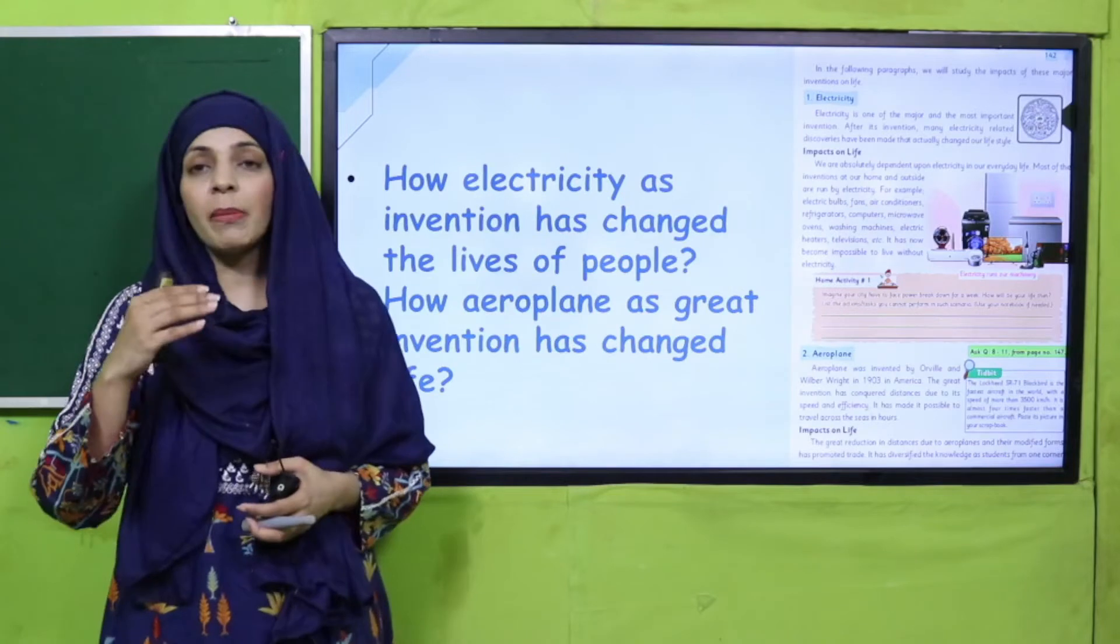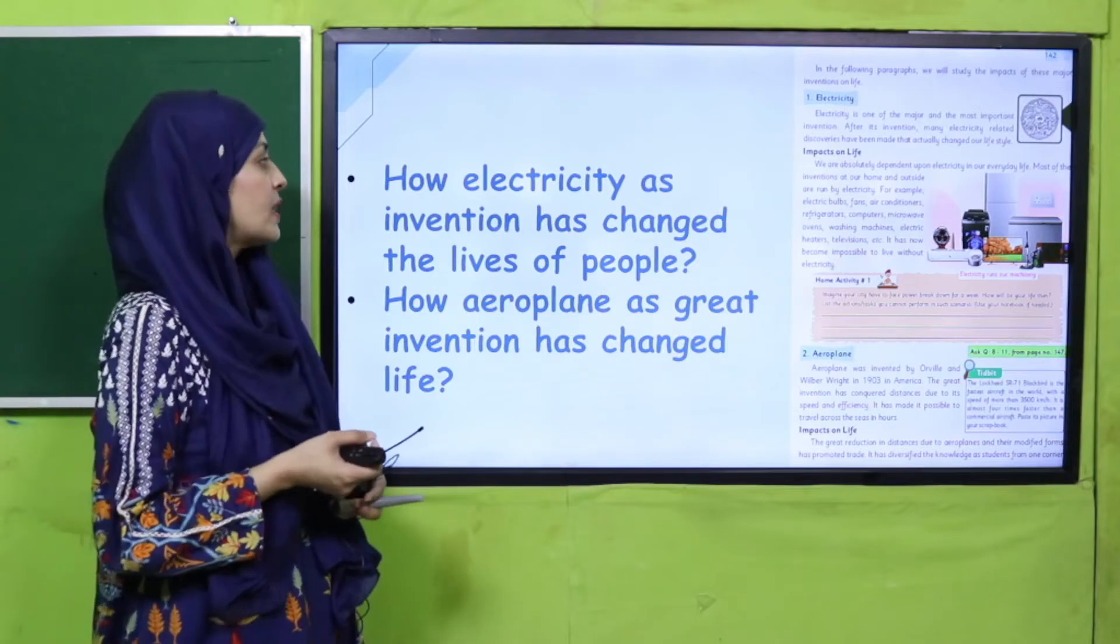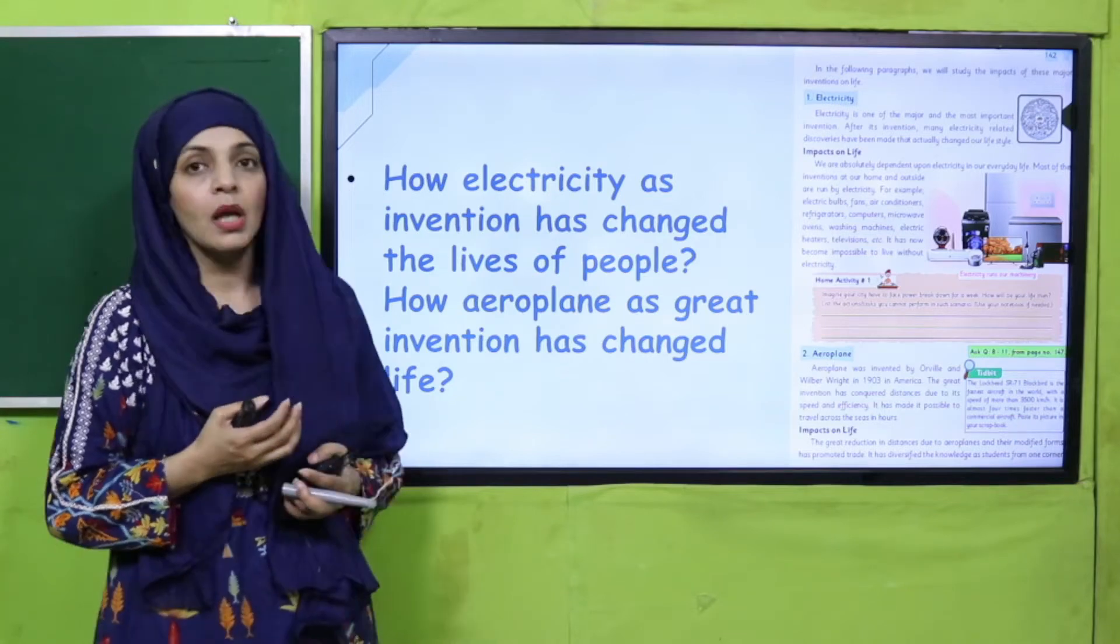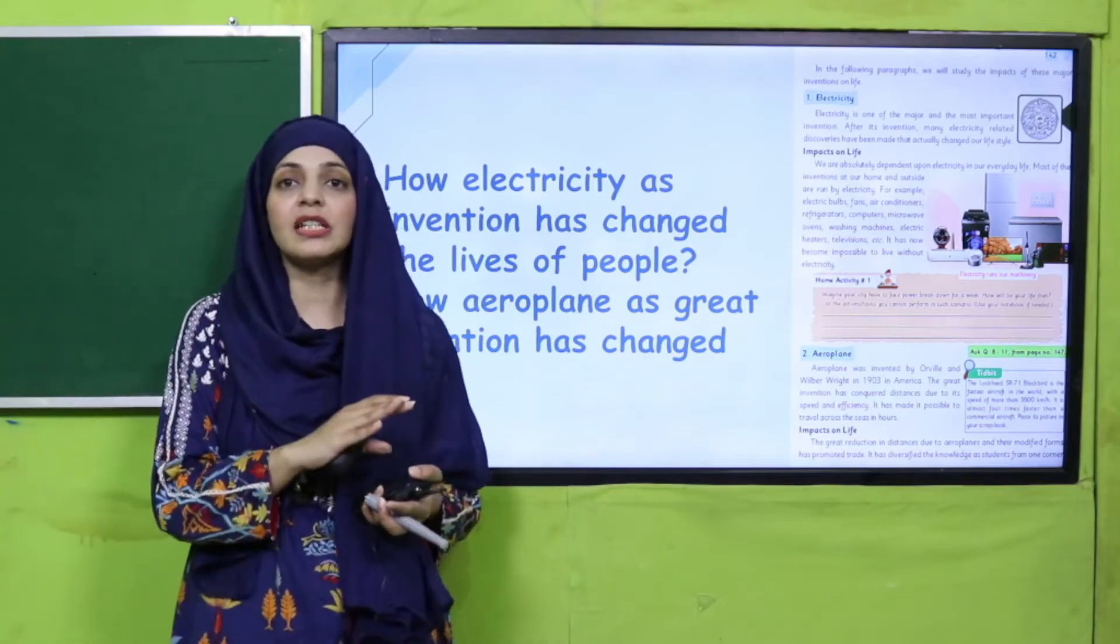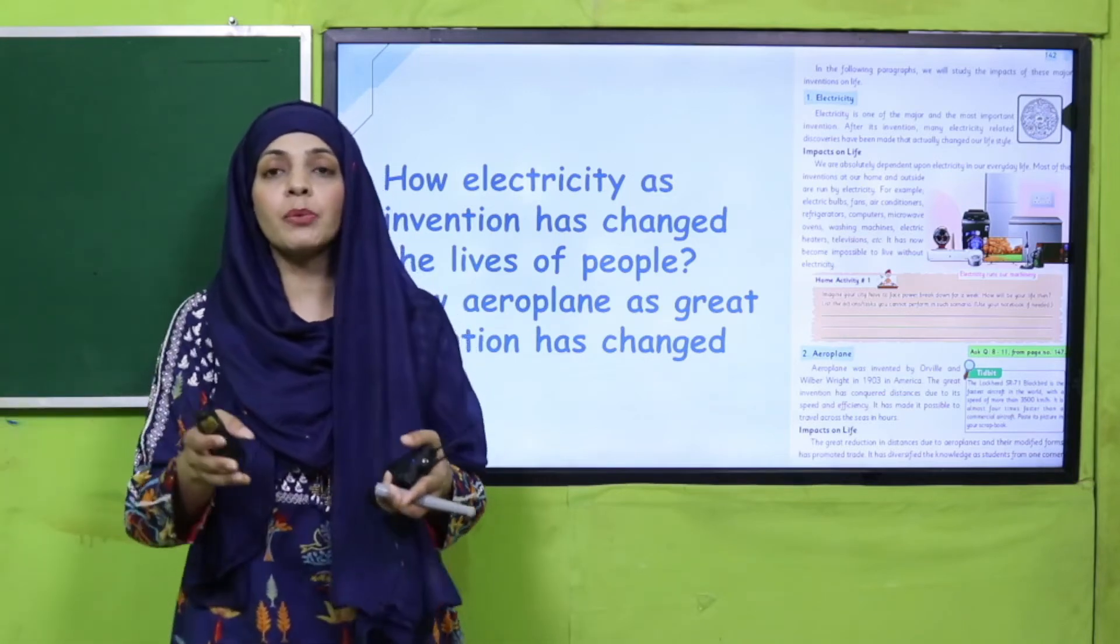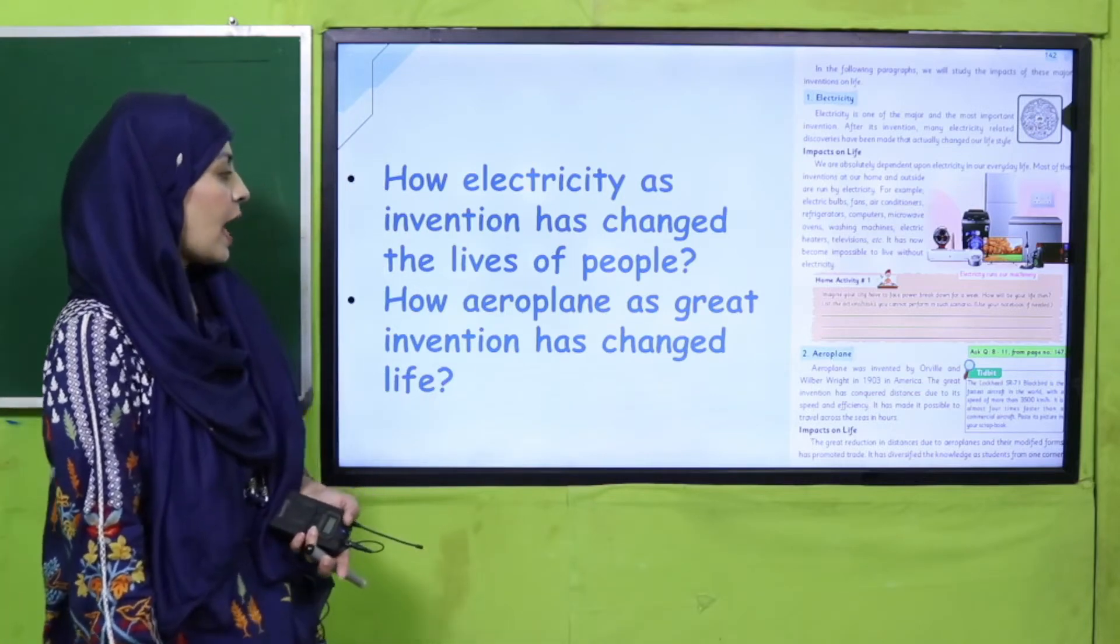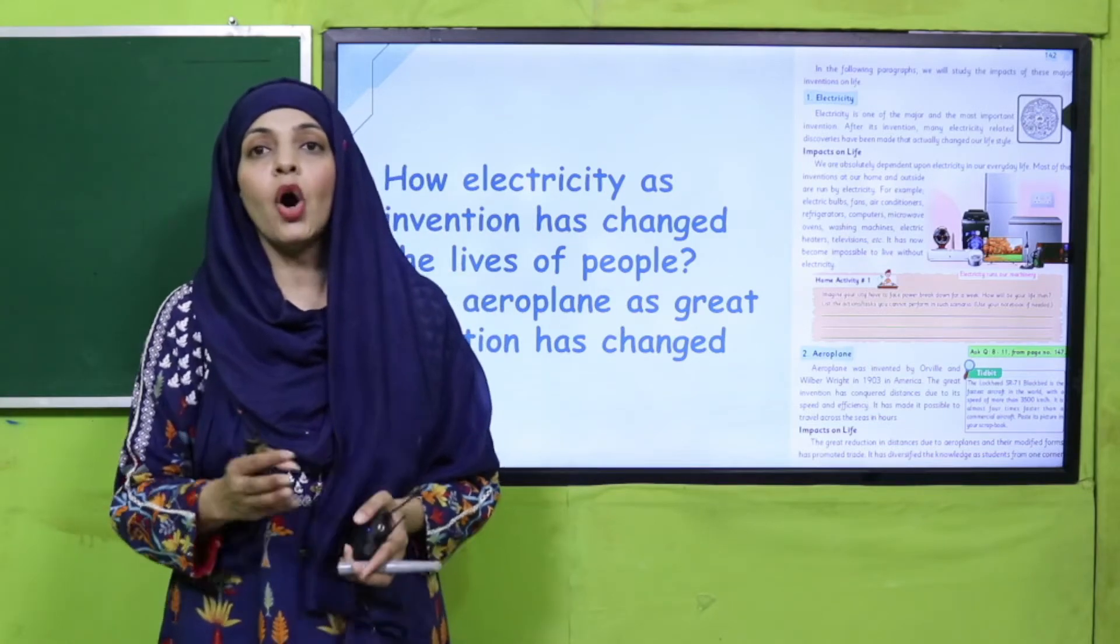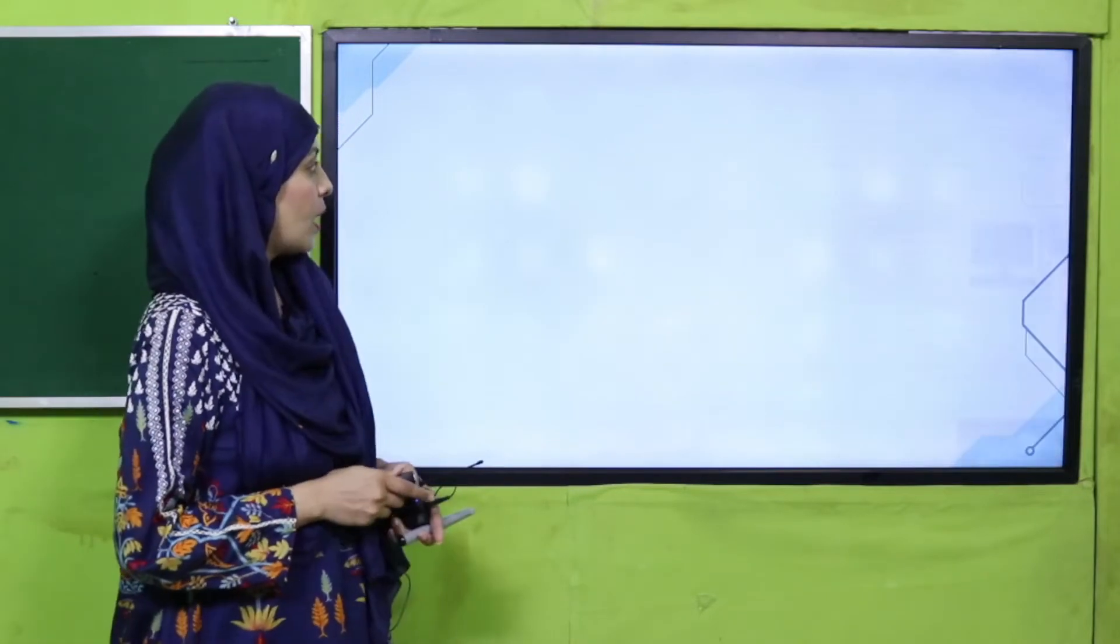Okay my dear students, then hum ne one by one mukhtalif inventions aur unke impacts to my life par unke baare mein discuss kiya. How electricity as an invention has changed the lives of people? So we depend so much on electricity ke jitni bhi mukhtalif inventions hain wo bhi electricity pe depend karti hain. Very major inventions like microwave oven, mobile phone, laptops and computers, these all depend on electricity. They cannot work without it. Next is how aeroplane as great invention has changed life. So aeroplane jo hai ye ek bohot hi zabardast invention hai aur isne faaslon ko bhi sameta hai aur humara waqt ko bhi bohot zyada bacha liya hai.